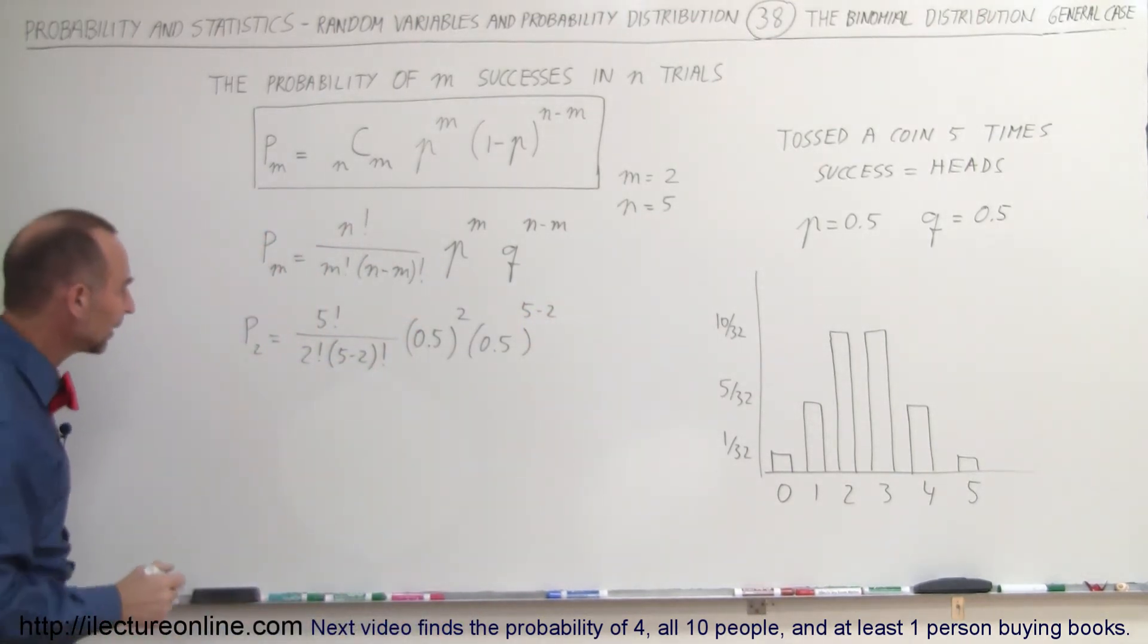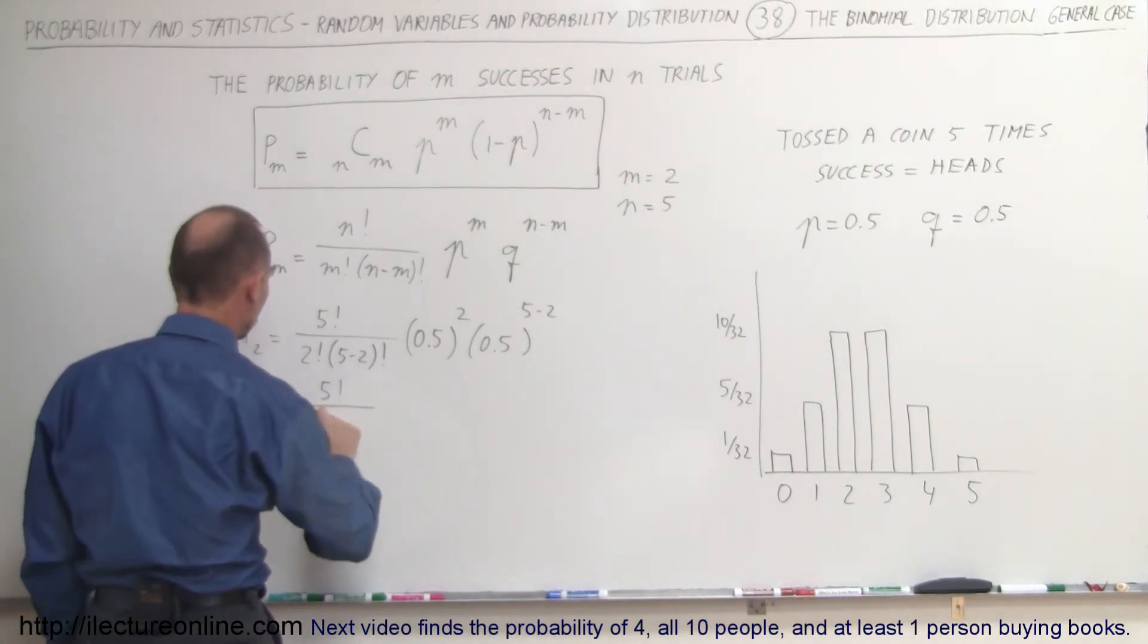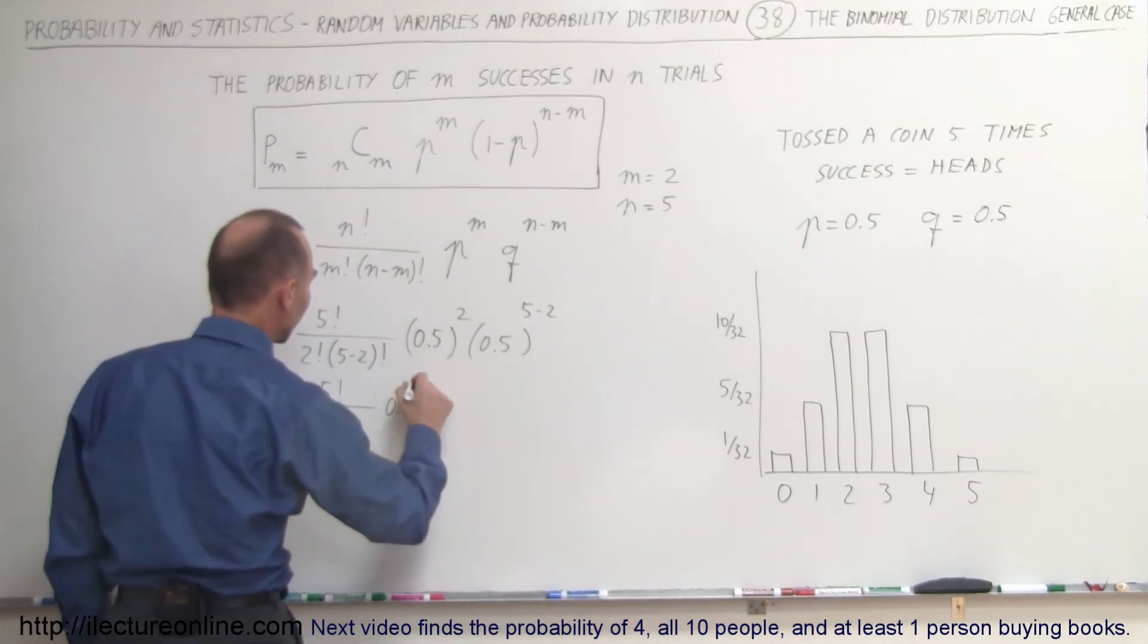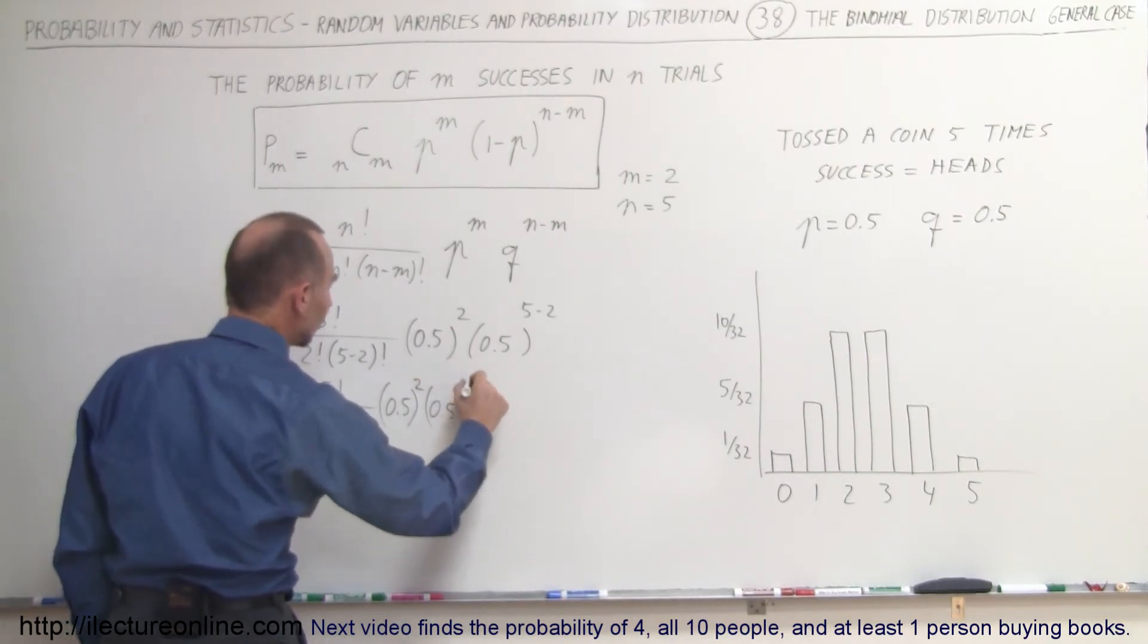Simplifying this a little bit, this would be equal to five factorial divided by two factorial times three factorial times 0.5 to the second power and 0.5 to the third power.